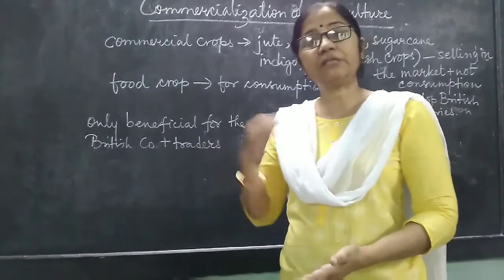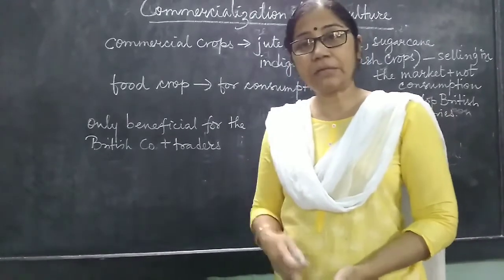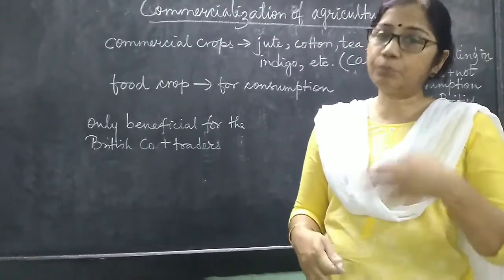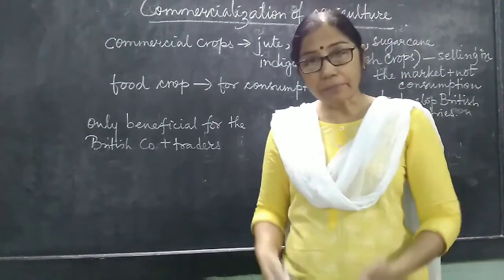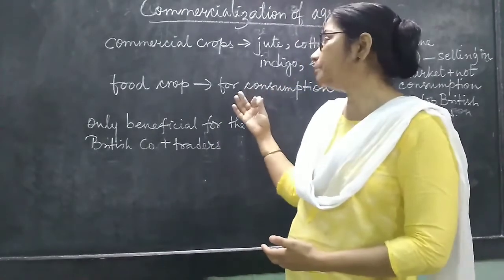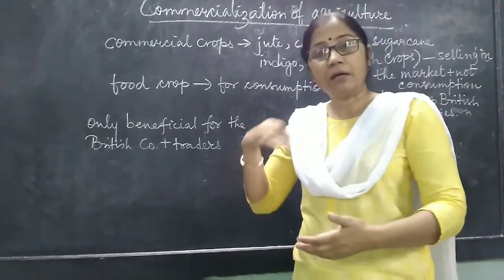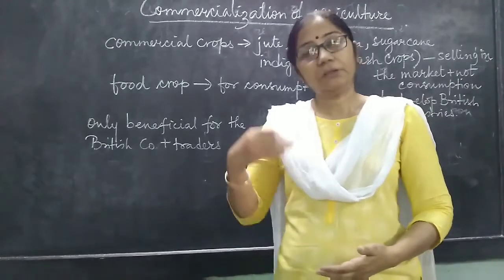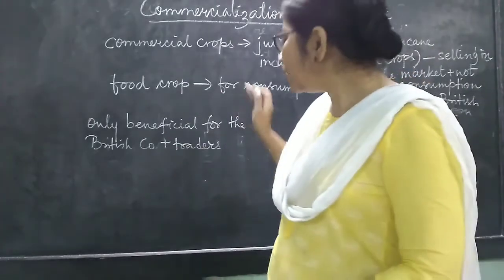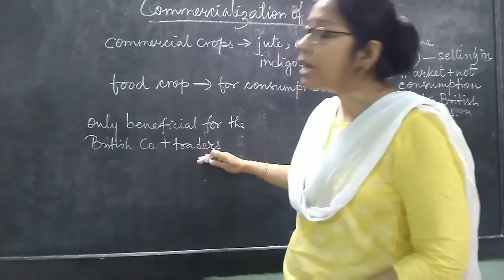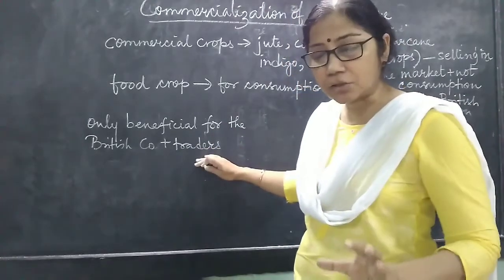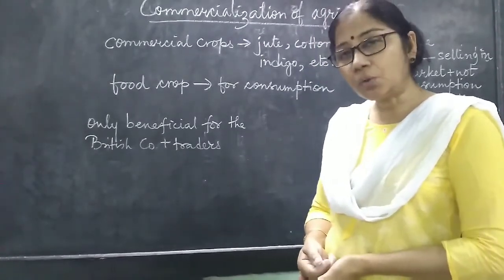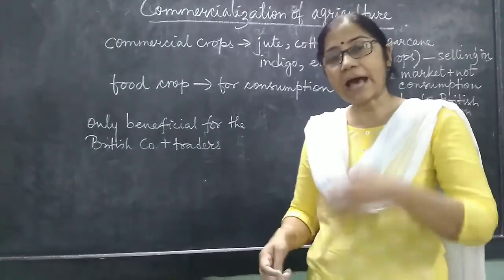But these cash crops destroyed the fertility of the soil and the farmers were no longer able to produce any other crop in their land, which put the farmers in great misery. So commercialization of agriculture means growing commercial crops or cash crops for the benefit of the British industries. It only benefited the British East India Company, traders, and some Indian middlemen who acted between the farmers and the British company.